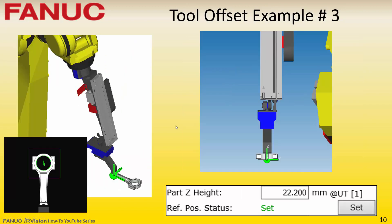For the third tool offset example, the part is held at a 15-degree angle from the robot faceplate and the orientation of the tool frame is such that its Z axis is in line with the optical axis of the camera. The correct part Z height for this example is positive 22.2 millimeters because the tool frame origin is located 22.2 millimeters below the feature being located and the Z axis points up to the camera.